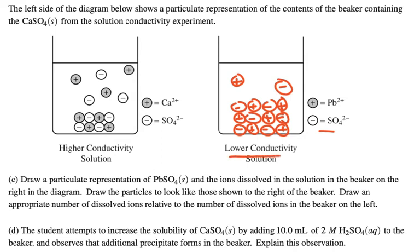This one here had lower conductivity because there are fewer ions floating around in solution, fewer mobile ions. Here it had higher conductivity because it had more mobile ions. So this is the way I'm going to draw my picture. And if I do that, I'm going to get one point.